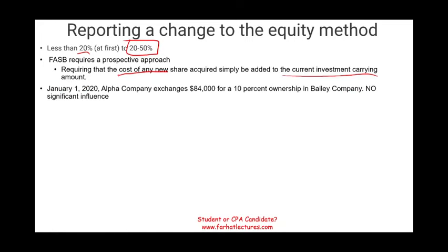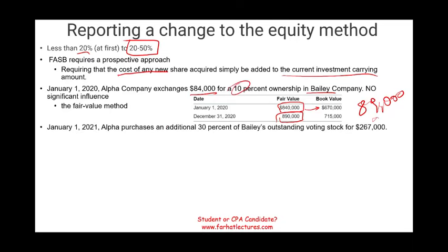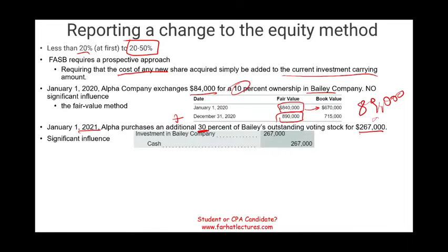For example, January 2020, Alpha Company exchanged $84,000 cash for 10% ownership in Bailey. We assume no significant influence, so we use the fair value method. The fair value when purchased and the book value are given; at the end of the year, the fair value was $890,000, so our investment is worth $89,000 — we own 10%. Then January 1st, 2021, we purchased an additional 30% for $267,000, bringing total ownership to 40%. Journal entry: debit Investment in Bailey $267,000, credit cash $267,000.